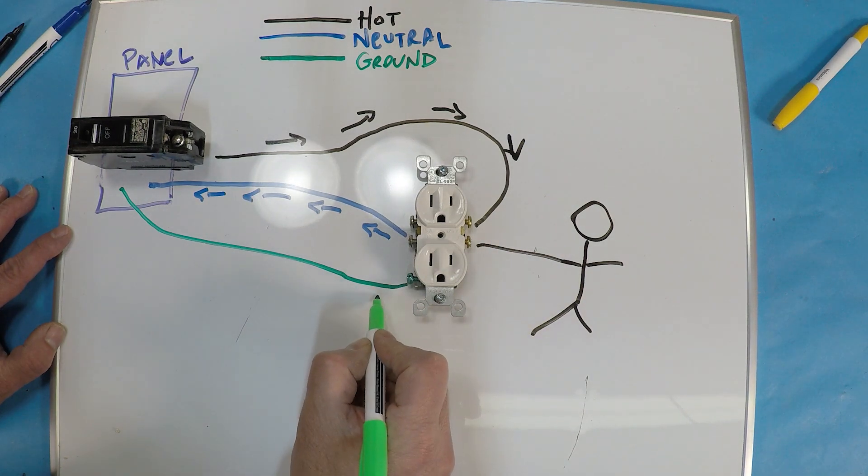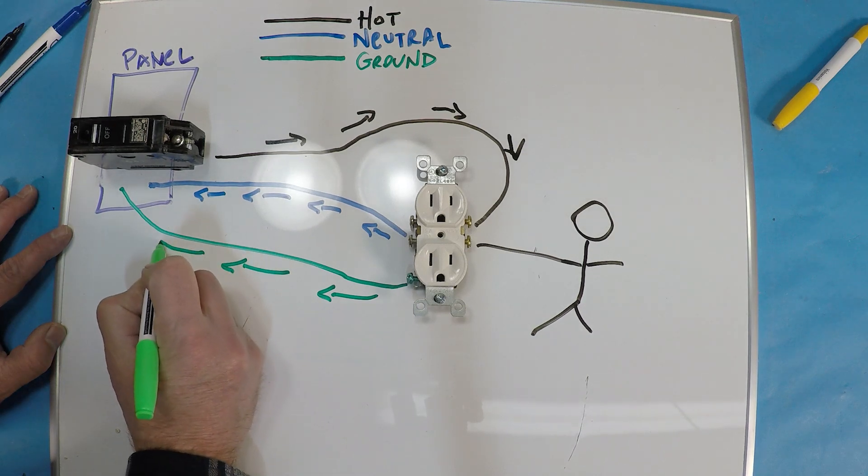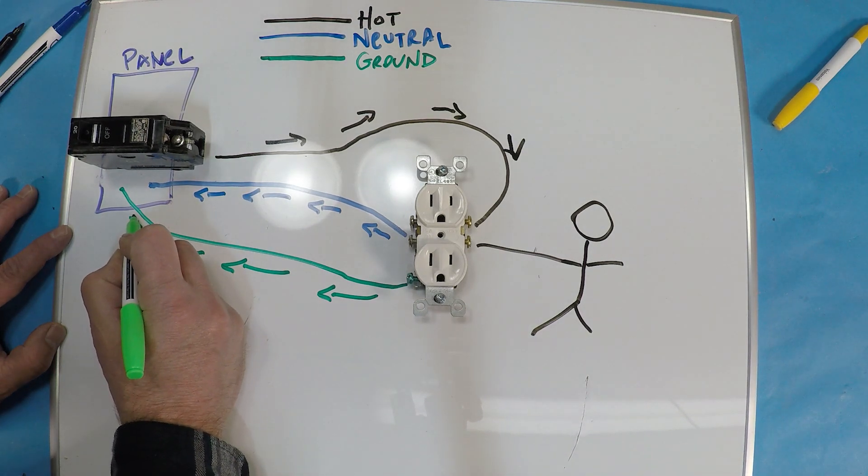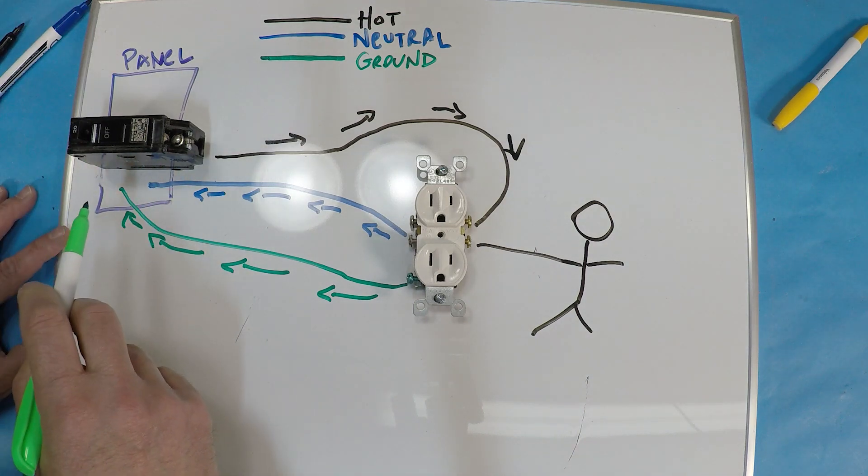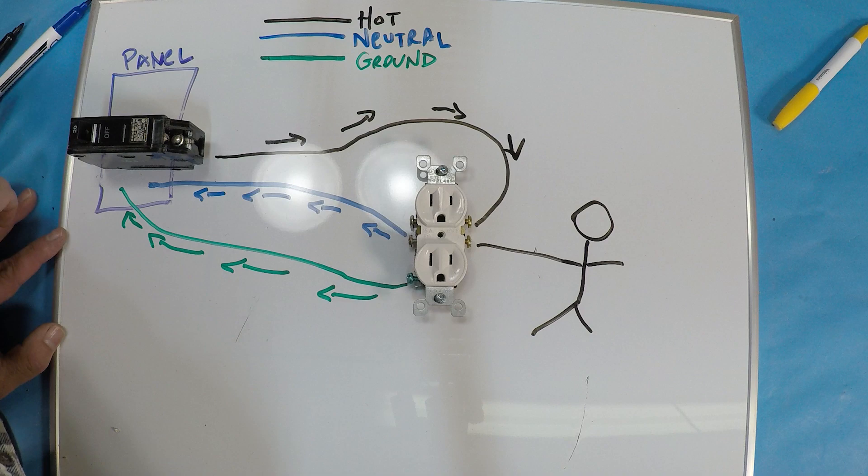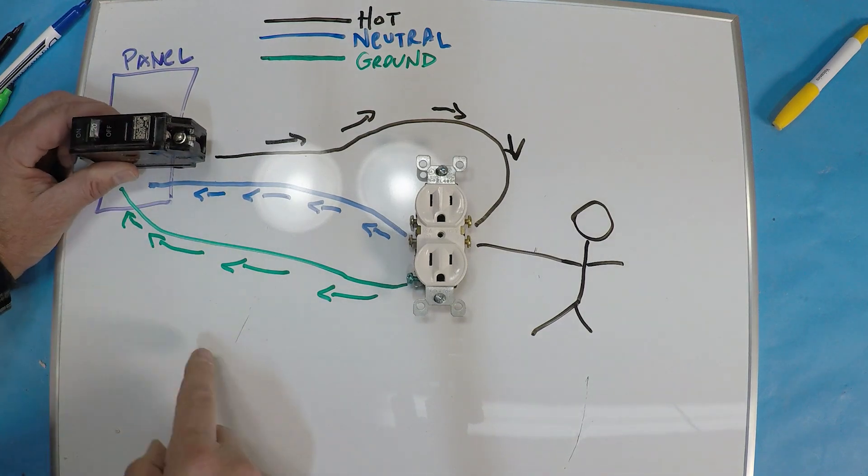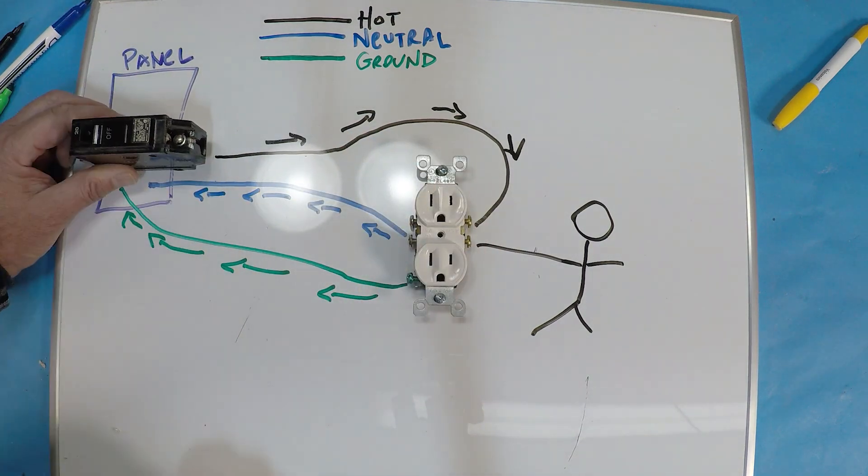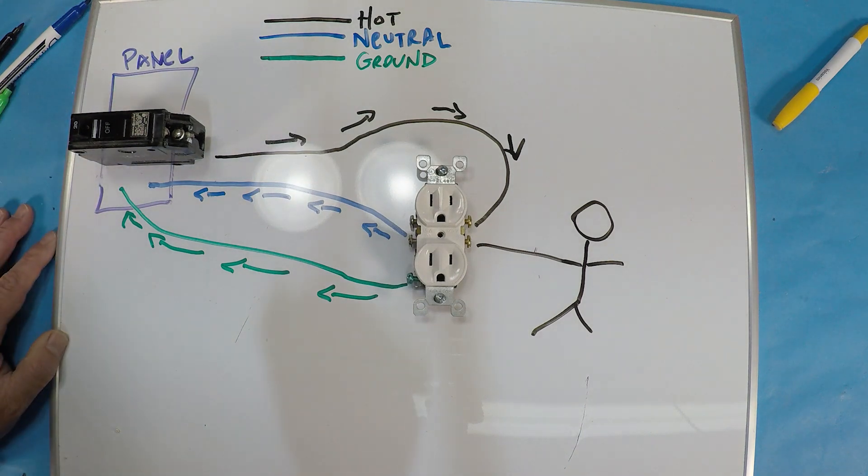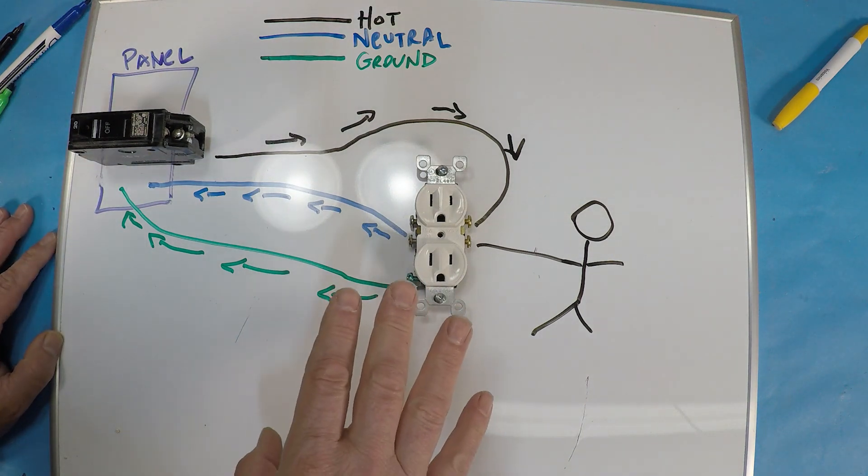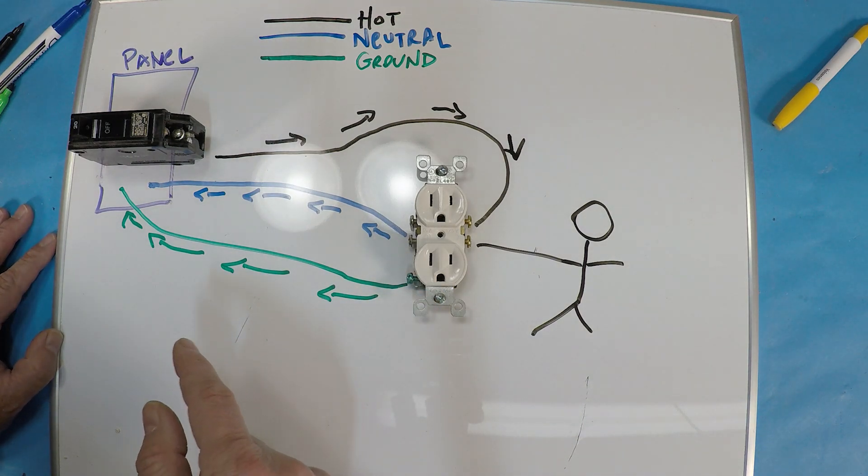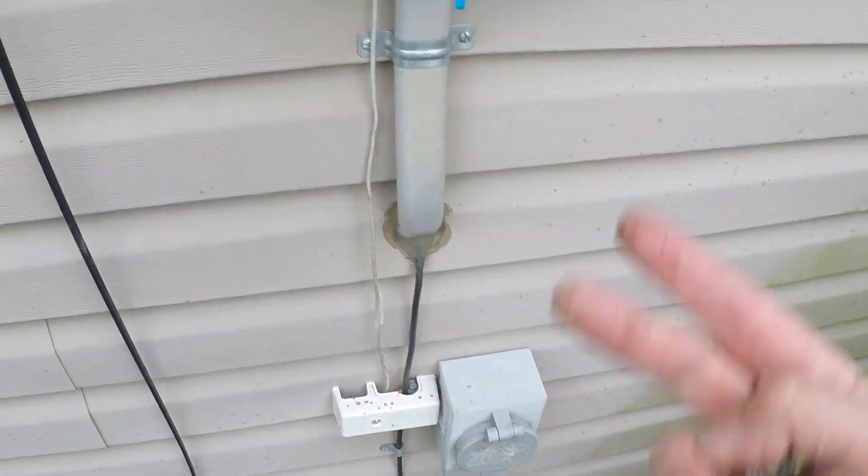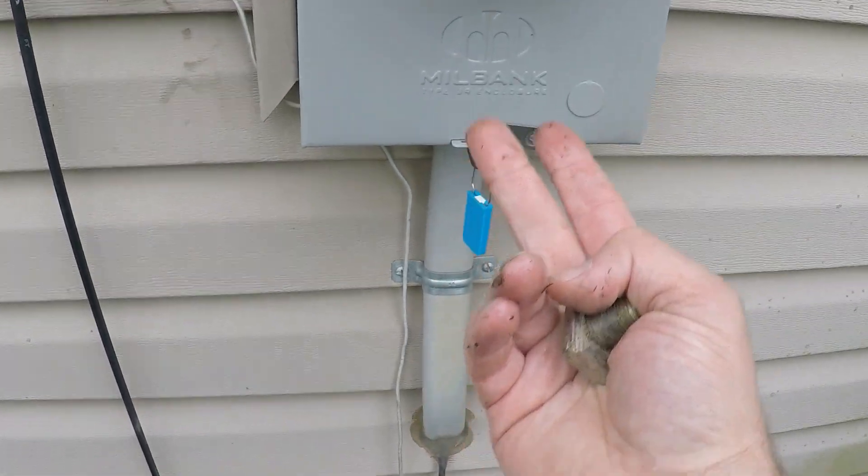And now once it does that, this breaker is going to sense the irregularity and it'll trip, and all that happens in a blip. Now people think that when it goes back it actually goes in the ground. I'm going to show you what the ground looks like. Here we are outside and the breaker panel's on the other side here where the meter is.